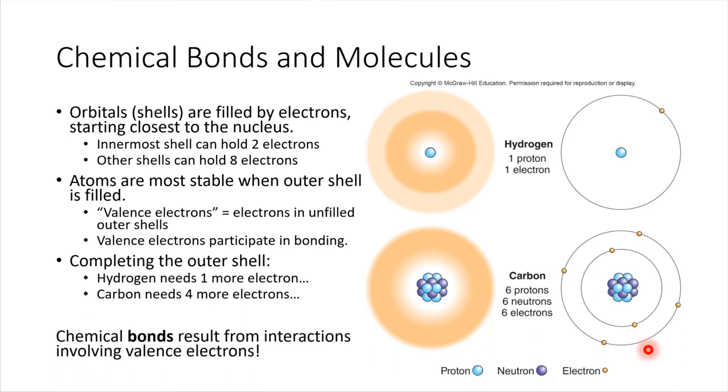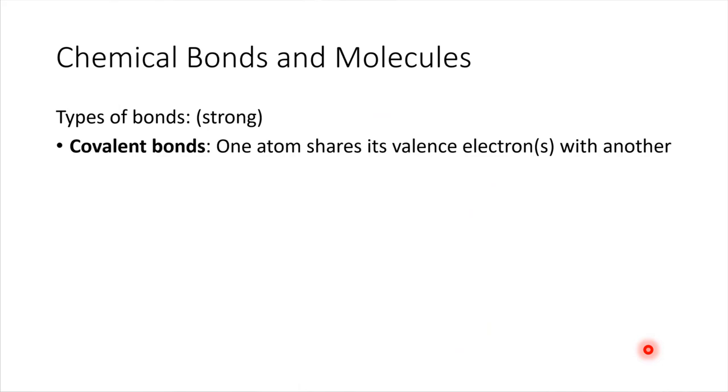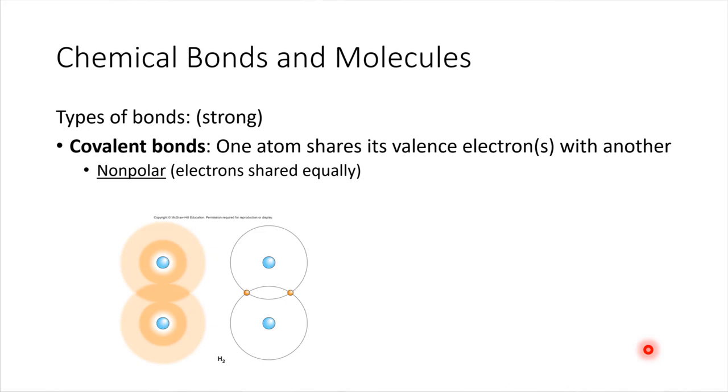So chemical bonds. There are a few different types of chemical bonds. All of them will involve the valence electrons. The first type, and the strongest type, of bonding is called covalent bonding. Covalent bonds happen when a valence electron is shared between two atoms. The sharing could be an equal sharing, in which case we'd be talking about a nonpolar bond. That's the type of bond that exists between two hydrogen atoms. This is hydrogen gas, H2.